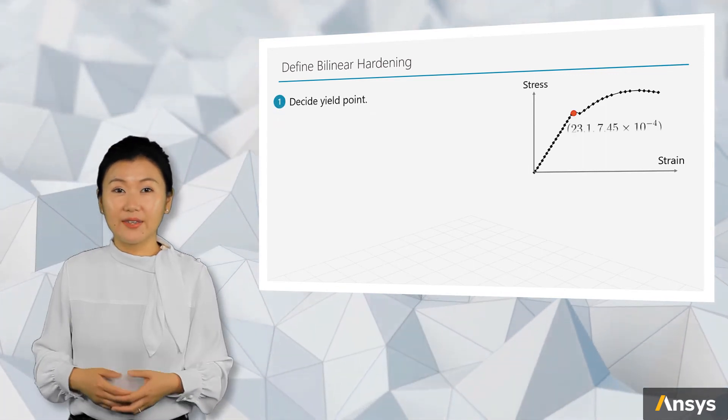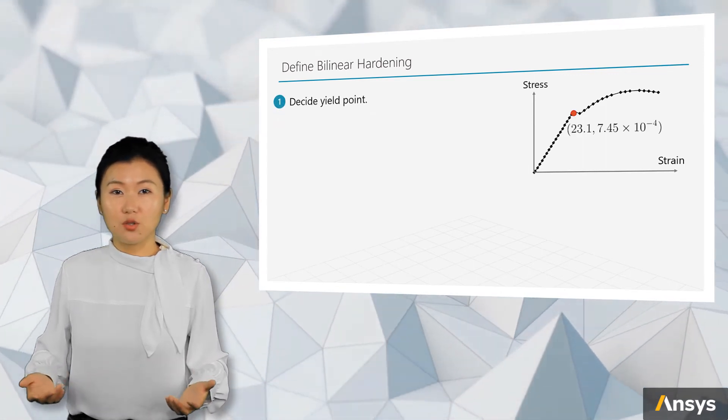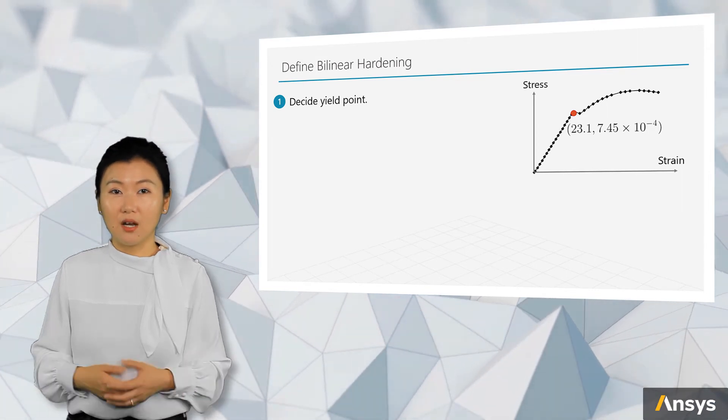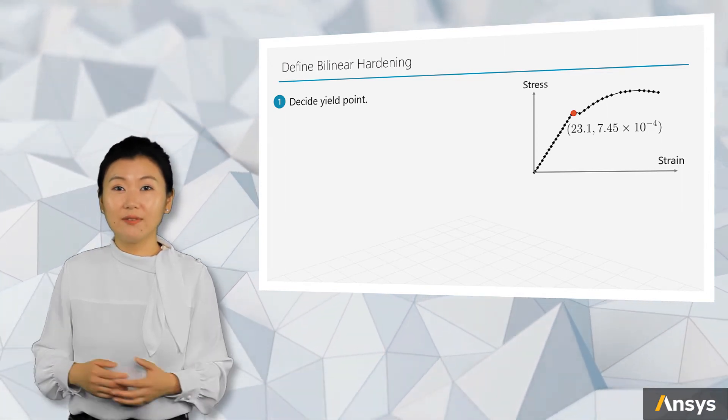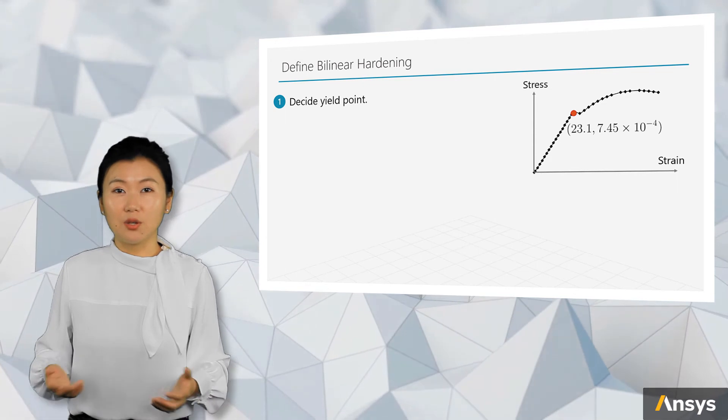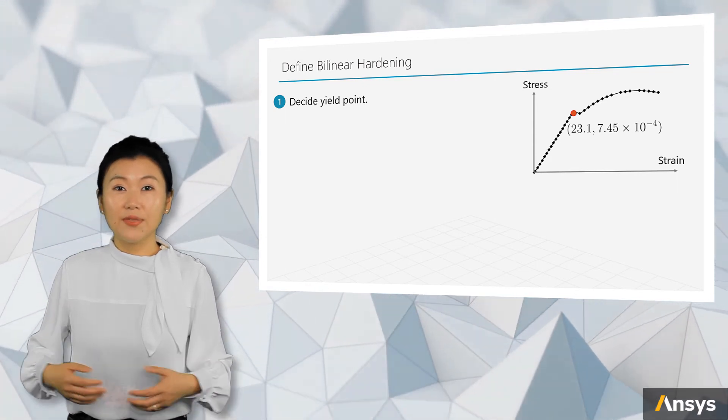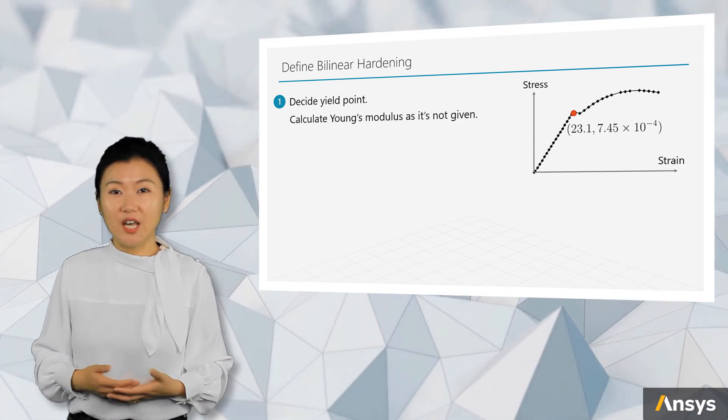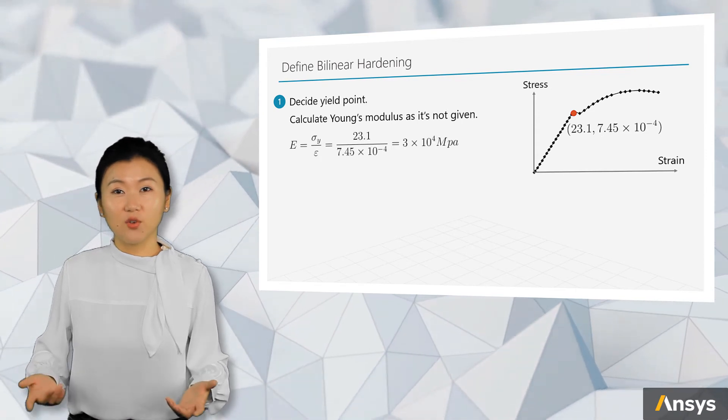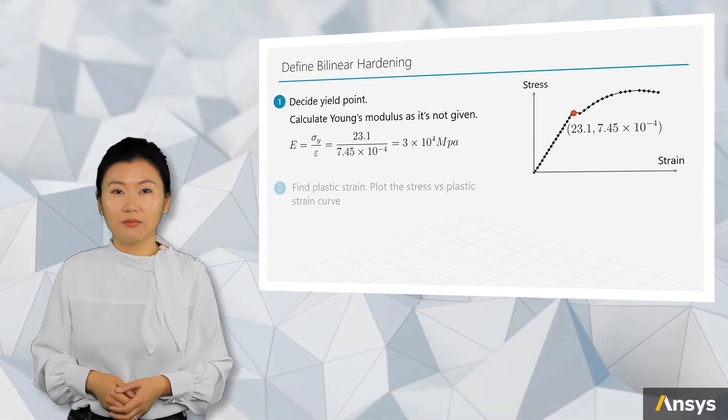First of all, we decide that the yield point is at stress equals to 23.1 MPa, and its strain equals to 7.45 times 10 to the minus 5. With these two data, we can calculate Young's modulus, which is the tangent for the first linear part.